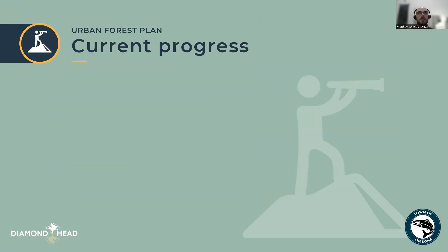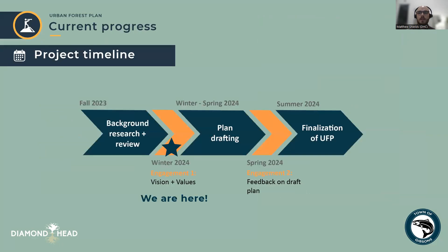That was my brief overview on the scope of the project. Now I'm going to share some results from what we've found so far about the urban forest in Gibsons. These results come from the first phase of work dedicated to background research and review. We're currently in winter 2024 with public engagement to understand the community's visions and values. We haven't started drafting the plan in earnest because we need to hear from the community and collect additional pieces of information.